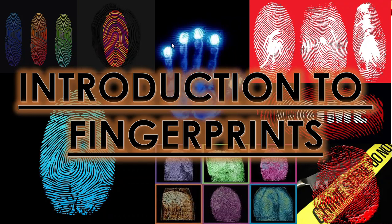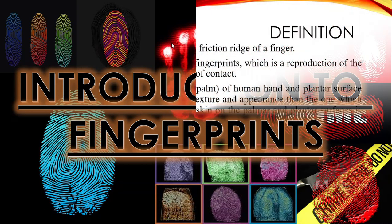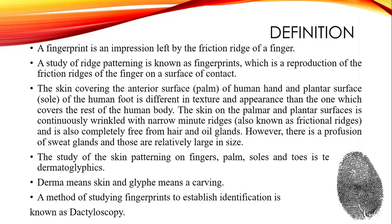As we have already started with our crime scene investigation lecture series, you must be aware of the different crime scene evidences that investigative or police officers find at the crime scene. The fingerprint is one of the most crucial kinds of trace evidence. To understand why this evidence is so essential for criminal identification, let us begin with the introduction to fingerprints and start with the definition.